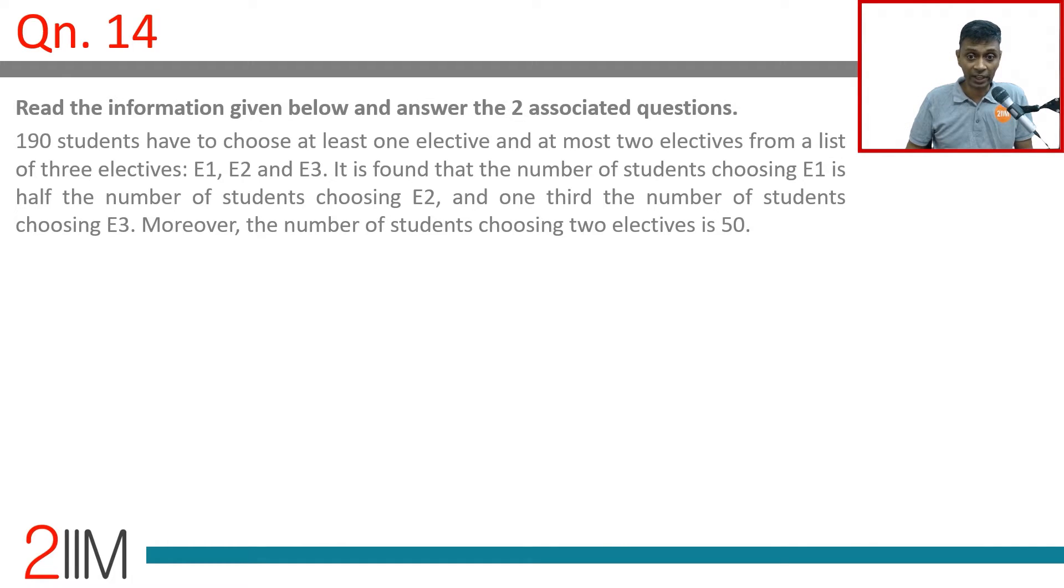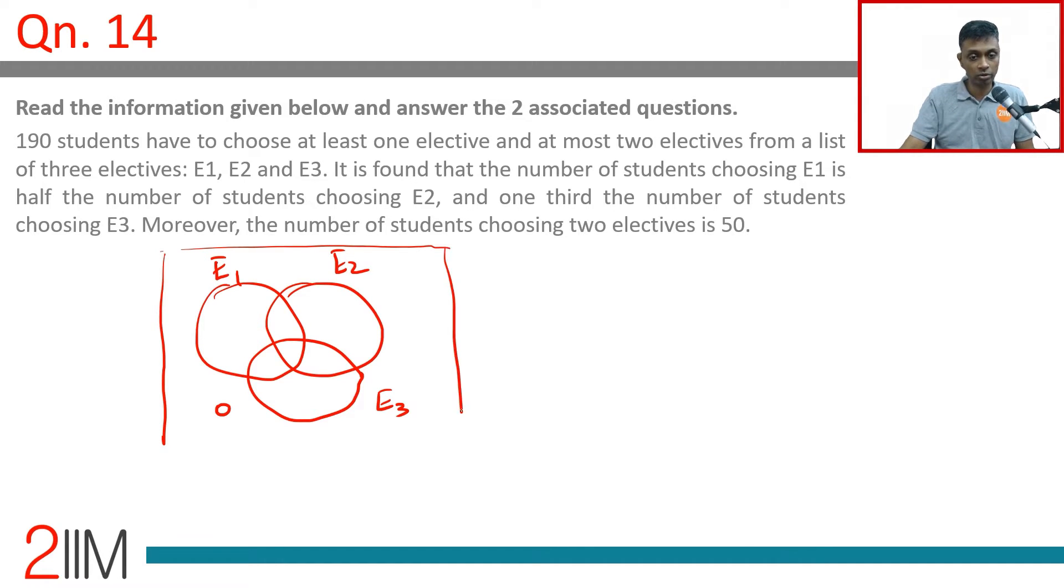190 students have to choose at least one elective and at most three electives from a list of three electives: e1, e2, and e3. Brilliant classic Venn diagram question. The first sentence we can understand: e1, e2, e3. I have to choose at least one, so we call this e1, e2, e3 at least one. So this is zero outside, total is 190.